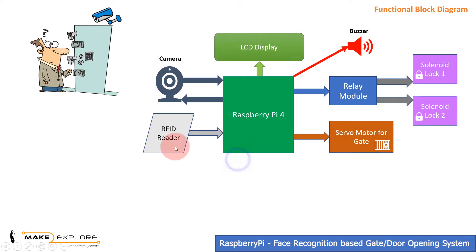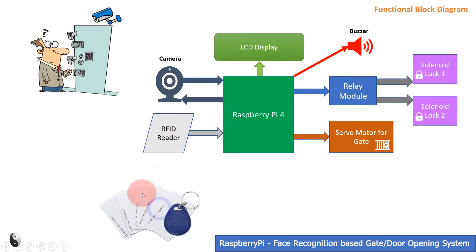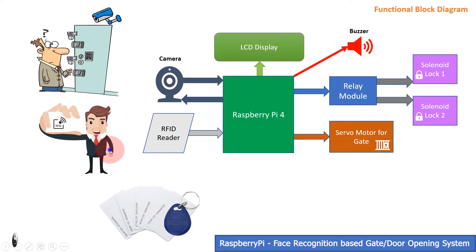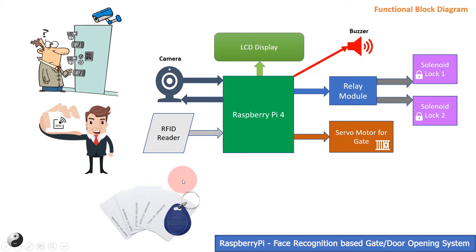We will use RFID as the first level of access. There will be RFID cards or tags which will first be registered and given to users. This will be done in the initial RFID coding. These are just for some basic level of authentication, and to invoke the camera system whenever a user comes to the gate. Now let's see how the system will work.